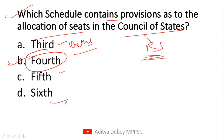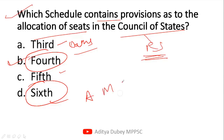The Sixth Schedule covers provisions for the administration of tribal areas in the states of Assam, Meghalaya, Tripura, and Mizoram. This question can also be asked separately — which state does not fall under the Sixth Schedule? A trick you can remember is 'AMT' — Assam, Meghalaya, Mizoram, and Tripura. These four states fall under the Sixth Schedule, dealing with administration of tribal areas.